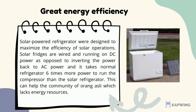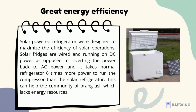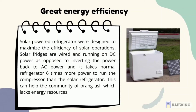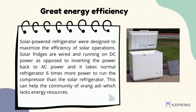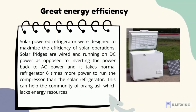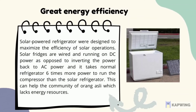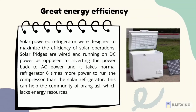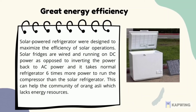The second reason is that the solar power refrigerator has great energy efficiency. It was designed to maximize the efficiency of solar operations, running on DC power as opposed to inverting back to AC power. It takes a normal refrigerator six times more power to run the compressor than the solar refrigerator, which can greatly help the Orang Asli community that lacks energy resources.